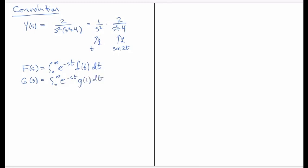I'm going to be taking a lot of integrals here, so I don't want to use t for all of these dummy variables. Let me replace the variable in the first integral with tau: e to the minus s tau, f of tau, d tau. And I'll replace the variable in the second integral with w. These are exactly the same transforms because I've just changed the dummy variable, but it makes my life easier when I start putting them together into the product of F and G.